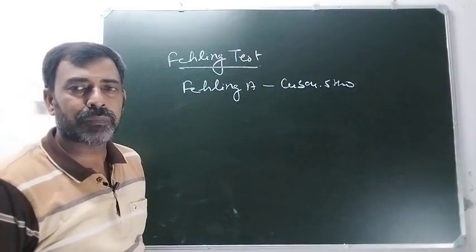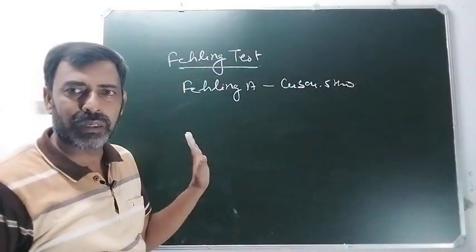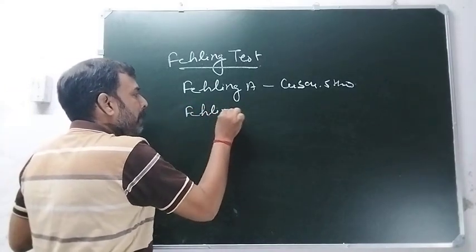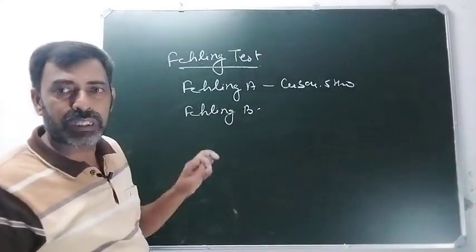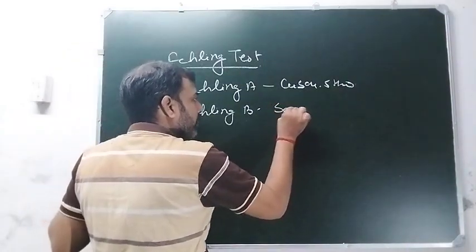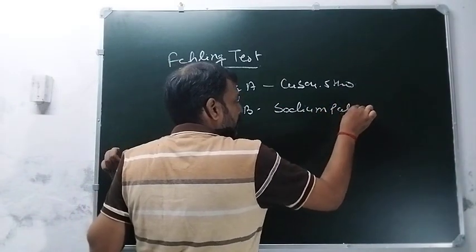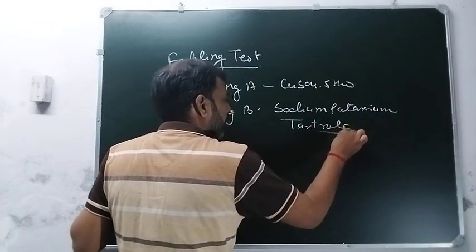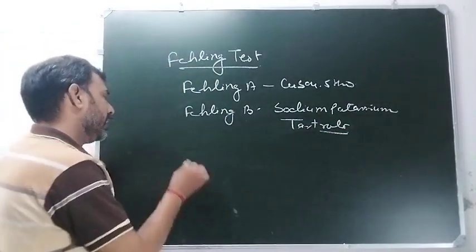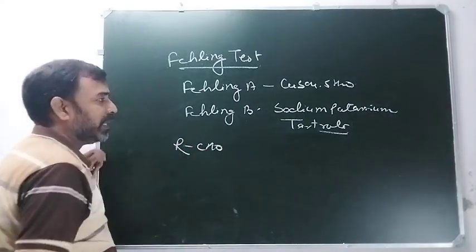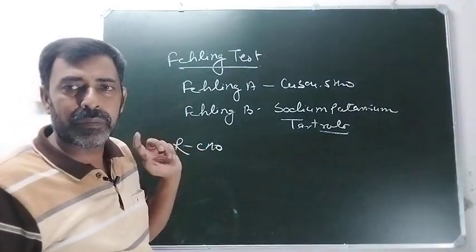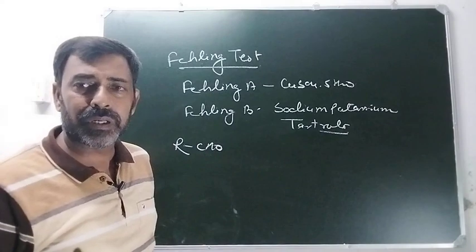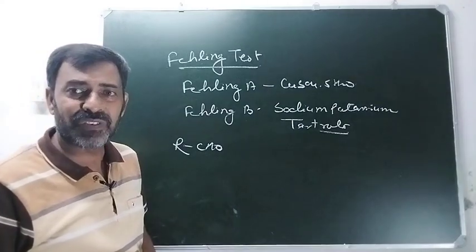Fehling reagent दो होते हैं: पहला होता है Fehling A - यह होता है copper sulfate CuSO4·5H2O (hydrated copper sulfate, या pentahydrated copper sulfate)। Blue color इस water की वजह से होता है। और दूसरा होता है Fehling B - यह होता है sodium potassium tartrate। Reaction कराने के लिए हम लेते हैं aldehyde और इसमें equal amount में Fehling A और Fehling B मिलाते हैं। तो material almost navy blue color का हो जाएगा।